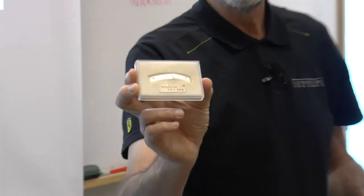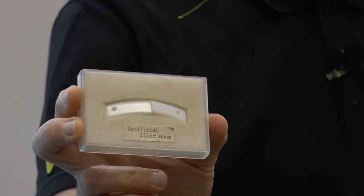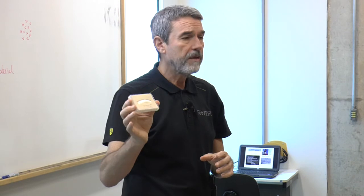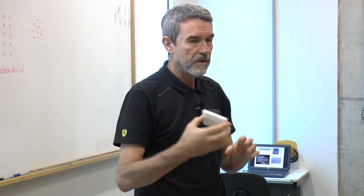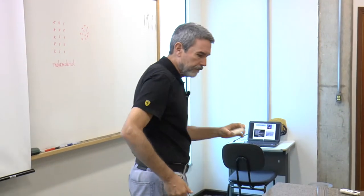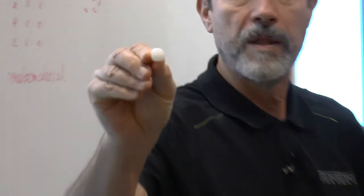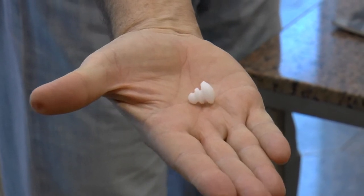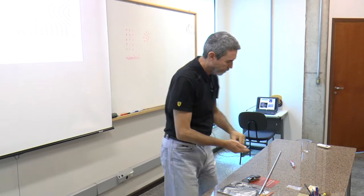Let me show you an artificial iliac bone — one of the biomaterials I was talking about. They have sold about 100,000 patients, mostly in Japan, who have one of these pieces inserted in them — it's a part of the iliac bone. We are also developing in our group some other types of glass ceramics for eye replacement and eye implants.